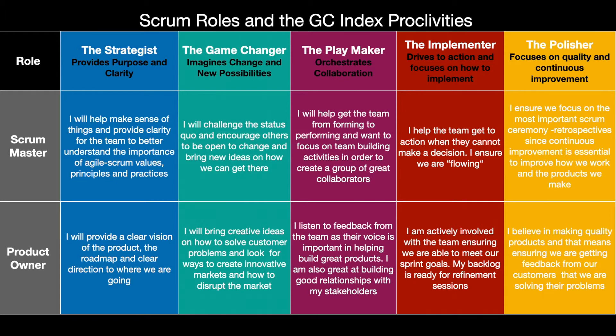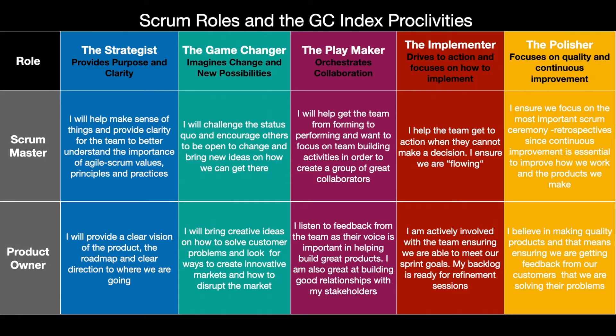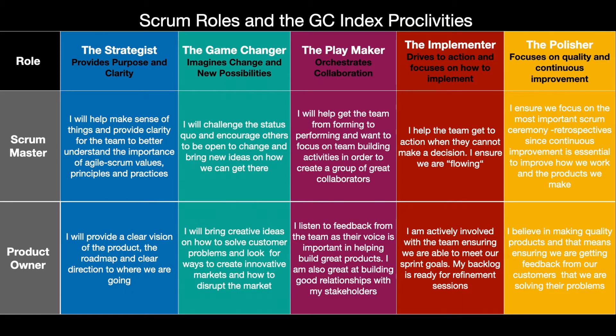I'm going to give you an example of Scrum Master. The Playmaker: you ever wonder why a Scrum Master does not focus a lot of energy on team building activities or really trying to get the team to collaborate more? There might be a direct correlation with their natural inclination — it's not somewhere they naturally go. A Playmaker is all about that. They will want to get the team from the Tuckman model of forming to performing and really focus on creating team building activities and finding ways to help the team work better.